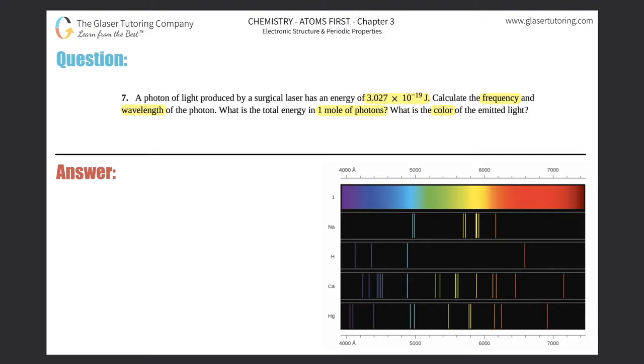The only thing that they gave us was an energy of 3.027 times 10 to the negative 19 joules. So energy equals 3.027 times 10 to the negative 19 joules. The first thing they're asking for is frequency. We did the derivation, but for right now just know that there is a formula you should memorize: E equals hν.